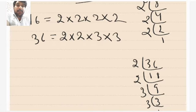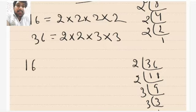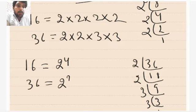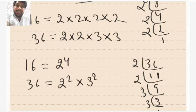Now these prime factorizations can also be written in exponential form: 16 can be written as 2 raised to the power 4, and 36 can be written as 2 raised to the power 2 into 3 raised to the power 2.